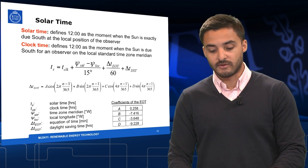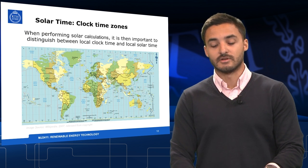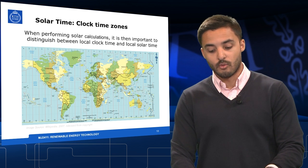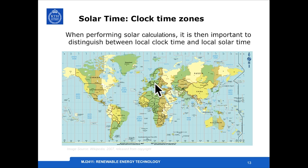Moving on to these correction factors independently, the first correction depends on the clock time zone. Wherever you are, there is a clock time and a solar local time, and the clock time will depend on the meridians or longitudes. It's important to know for this location which is the reference meridian used for clock calculations.